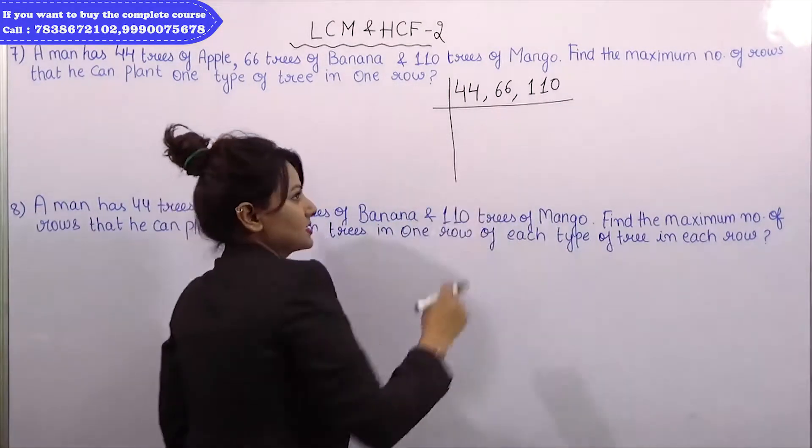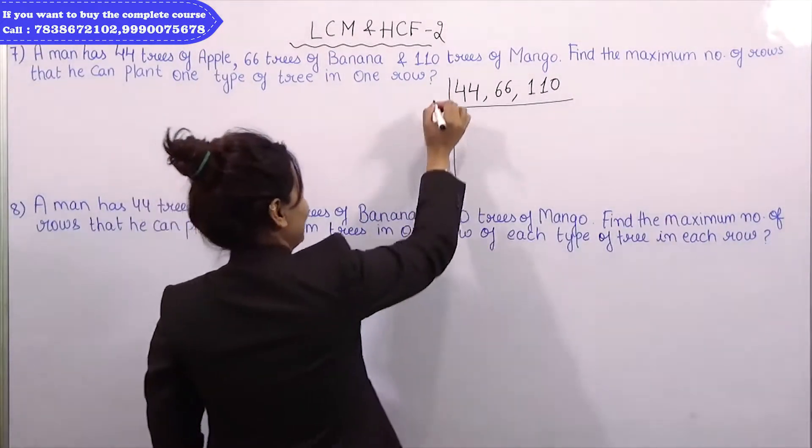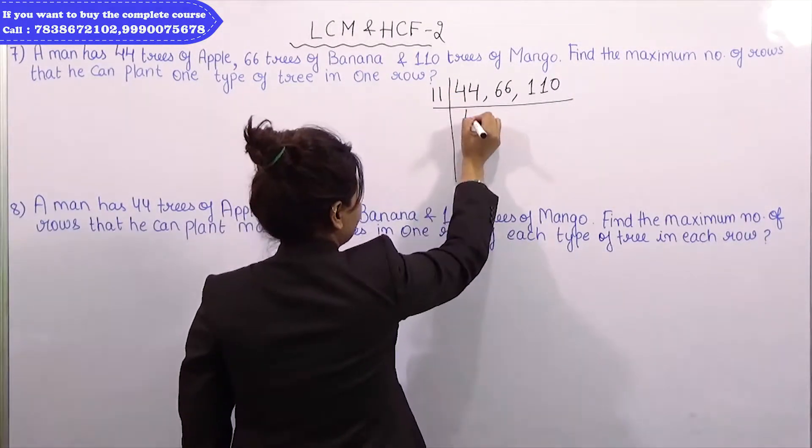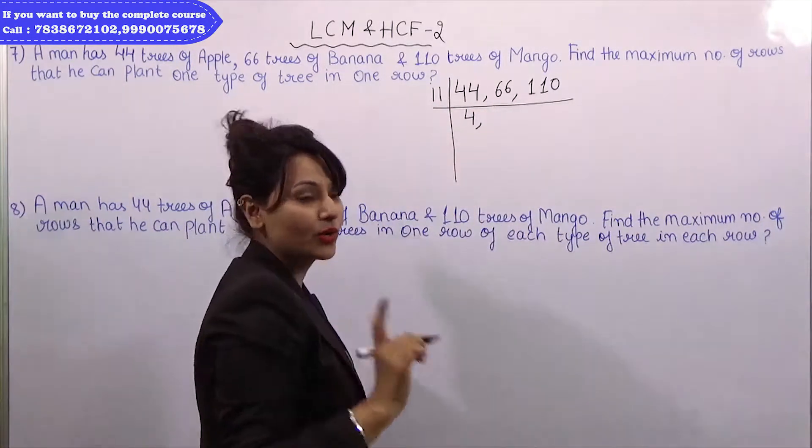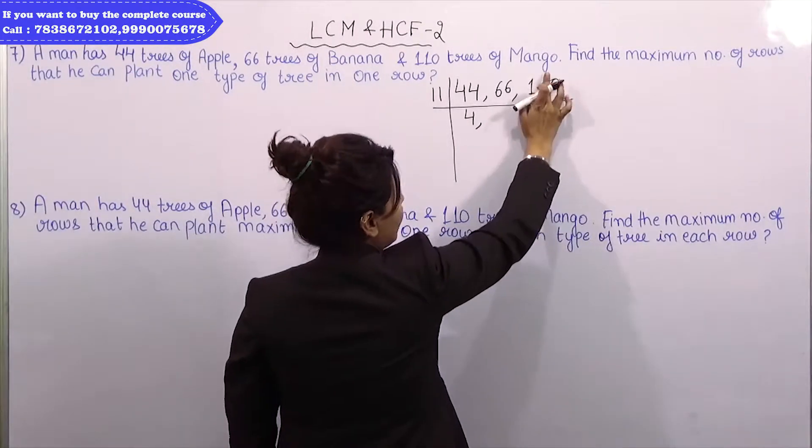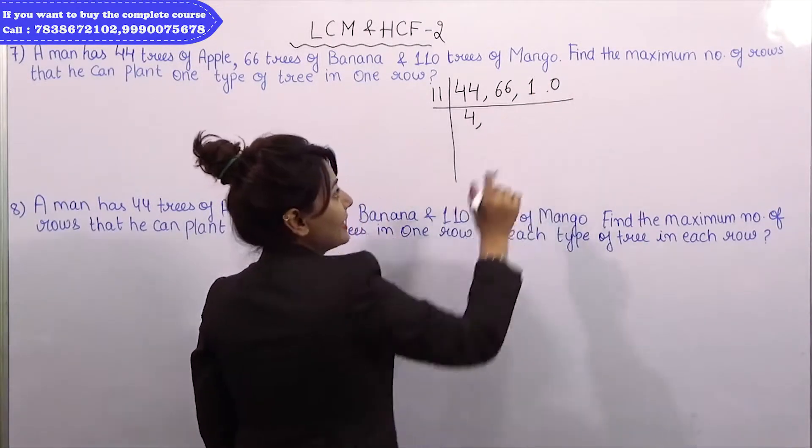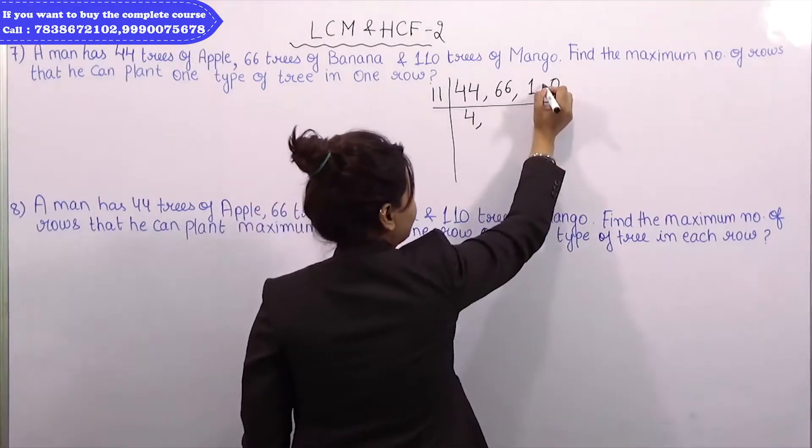44, 66, 110. We have 11 table. So we will do it from 11. Because from 11 we divide all the numbers from 11. If we do not divide one number from 11, if we do it from 10, then the HCF is 1 because it doesn't divide from 10.